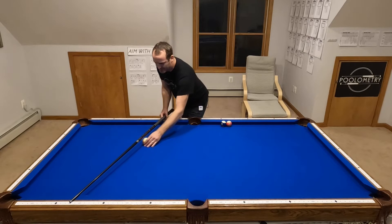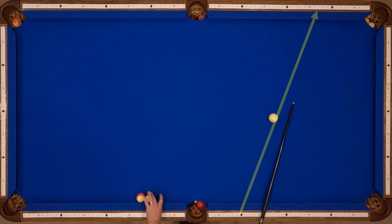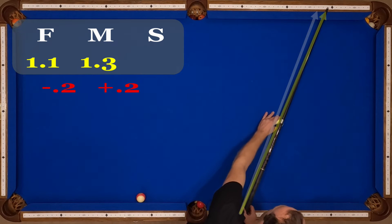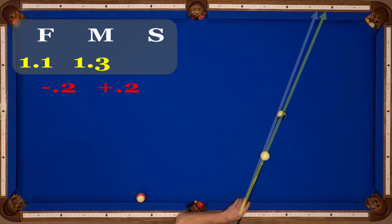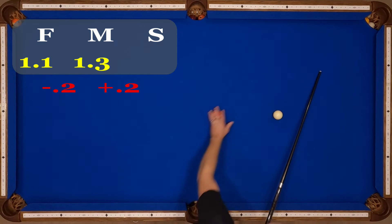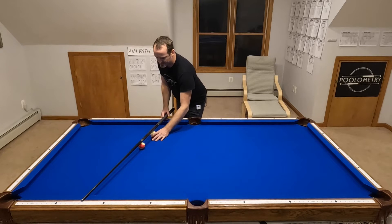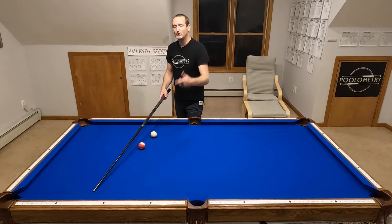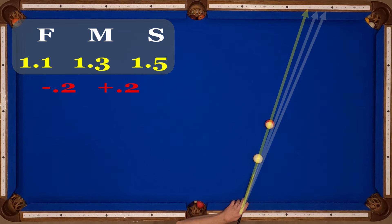I'm going to demonstrate my medium speed line and the speed window on either side. Here's 3 through 1.3, showing that pocket at medium speed. But if I cheat up the rail — from diamond 3 my speed window is 0.2 in either direction — I can cheat up the rail to 1.1. This becomes my fast speed, about 75% power. I can also cheat backwards 0.2 to 1.5, which is my slow speed. Keep in mind this slow speed is actually the least reliable line — some tables don't get the rail action a rolling cue ball picks up, so you might need to aim just shy of this or add a tiny bit of draw.